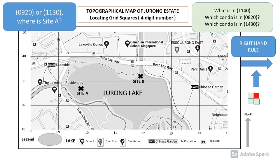Now let's take a look at how we locate grid squares using a 4-digit grid reference. What you need are your eastings and northings. Eastings are the numbers at the bottom — or occasionally at the top — of the map, and they increase as you move towards the east, most of the time towards the right-hand side. Northings are the numbers on the sides, and they increase as you move towards the north. On your map, eastings start from 08 and end at 15, and northings start from 10 and end at 50.